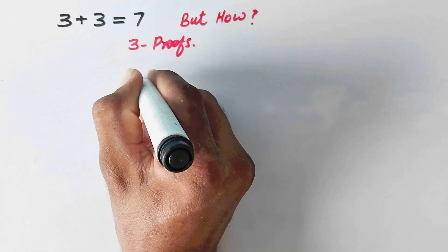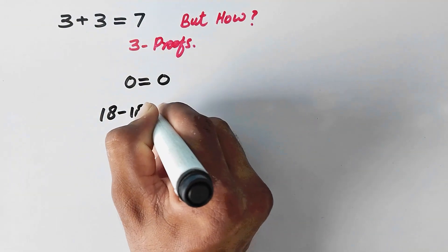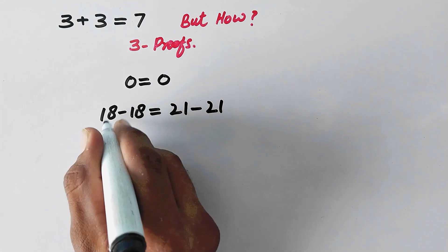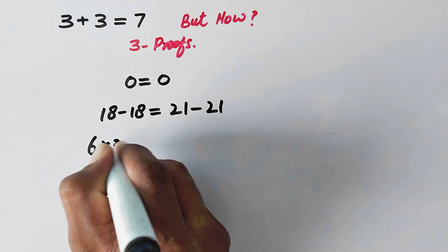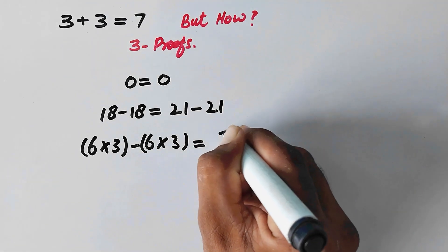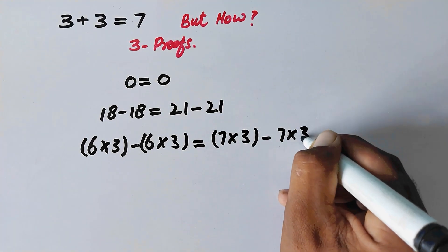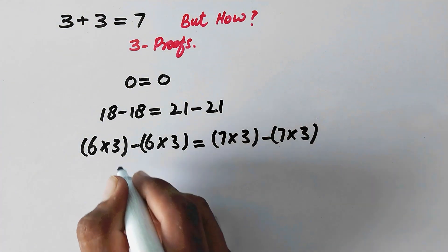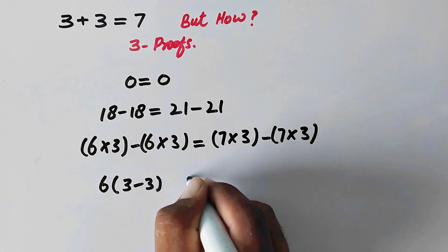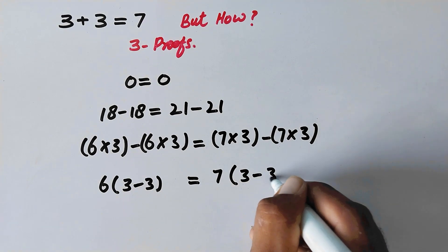For the third proof, we will write 0 is equal to 0, and 18 minus 18 equals 0, and 21 minus 21 equals 0. So we can write (3 plus 3 minus 6) times (3 minus 6) times 3, and 21 as 7 multiplied by 3 minus 7 multiplied by 3. Now here we write (3 minus 3) equals 6 times (3 minus 3), and taking 7 as common, it becomes 7 times (3 minus 3).